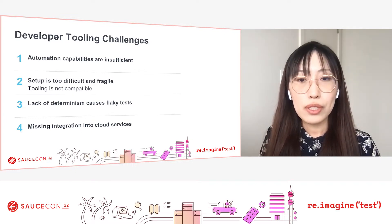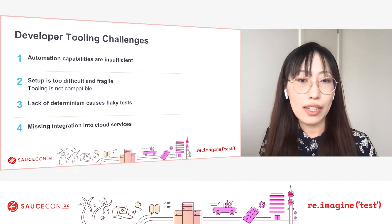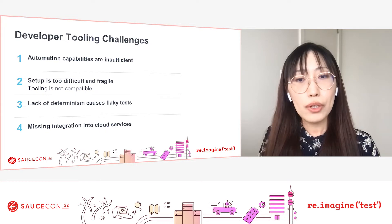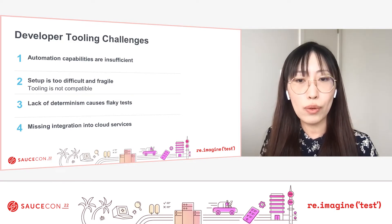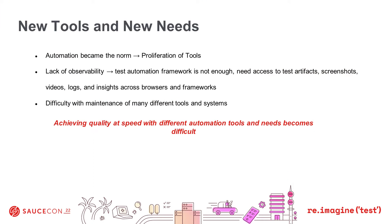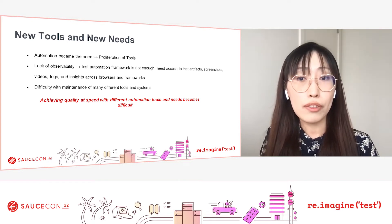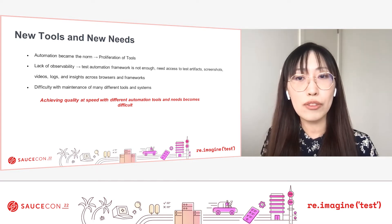Simply put, developers want to test in the languages they prefer, compatible with the tooling they prefer, and execute with reliability in the environment they prefer. Beyond that, development leaders understand that testing doesn't live in a vacuum, and they need to ensure they can unify quality signals with other test efforts in the pipeline. With the proliferation of automation frameworks and tools, coupled with the desire to achieve quality at speed while still allowing developers to have their preferences as quality shifts left, there are new needs for how these tools interact.